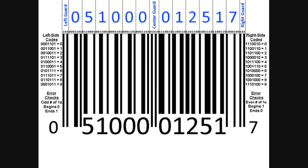But what do these numbers actually mean? The first number on the left-hand side — the zero — which is outside of the actual barcode, tells us what type of barcode this is. A zero is a standard barcode, a two is a weight item like fruit or meat, a three is a pharmacy item, and a five is a coupon.